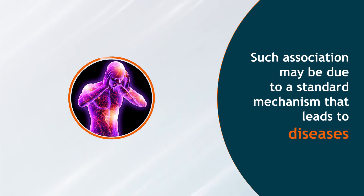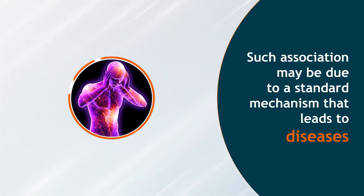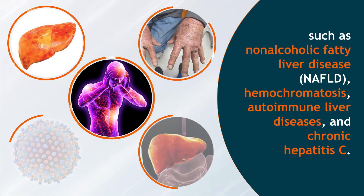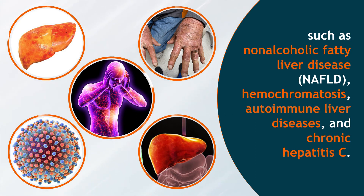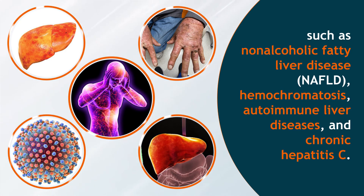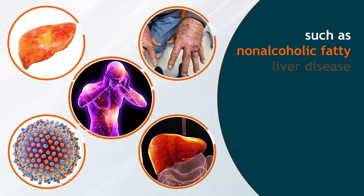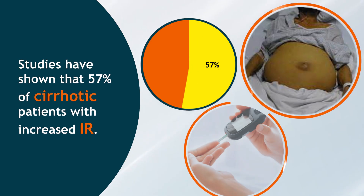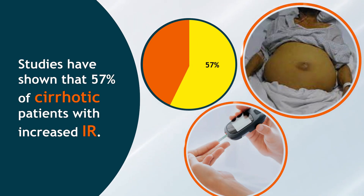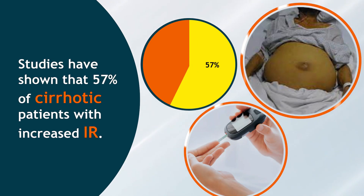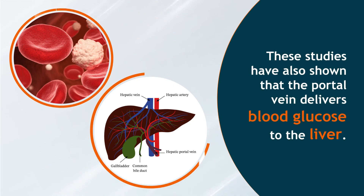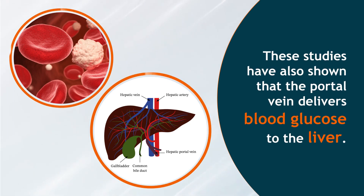The association between chronic liver disease (CLD) and IR has been known for a long time. Such association may be due to a standard mechanism that leads to diseases such as non-alcoholic fatty liver disease, AFLD, hemochromatosis, autoimmune liver diseases, chronic hepatitis C, and hepatogenous diabetes. Studies have shown 57% of cirrhotic patients with increased IR.